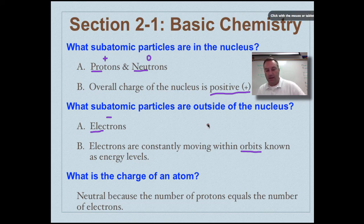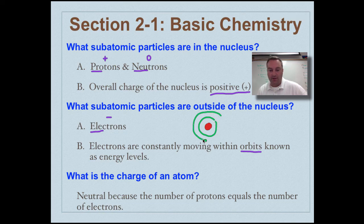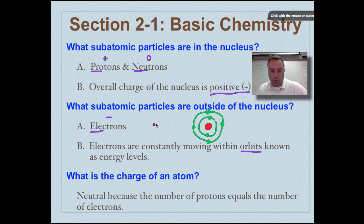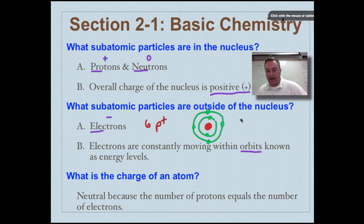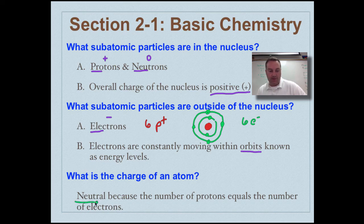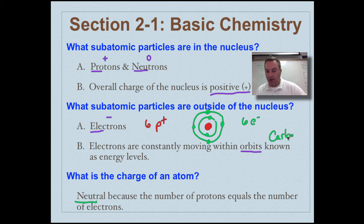Let's think of a nucleus as the center of a solar system and let's say that the electrons are moving around like the planets do around our sun. In this example we have six protons in the nucleus and we have six electrons. What's the overall charge of an atom? It's going to be neutral because the number of protons are going to cancel out the number of electrons. So six minus six equals zero.